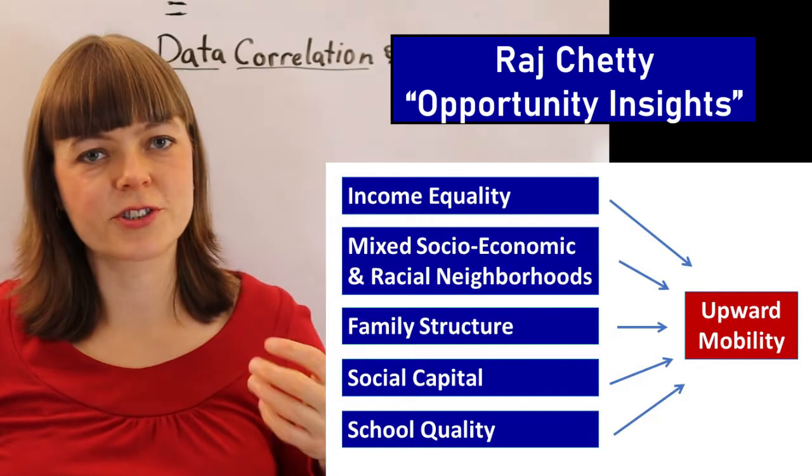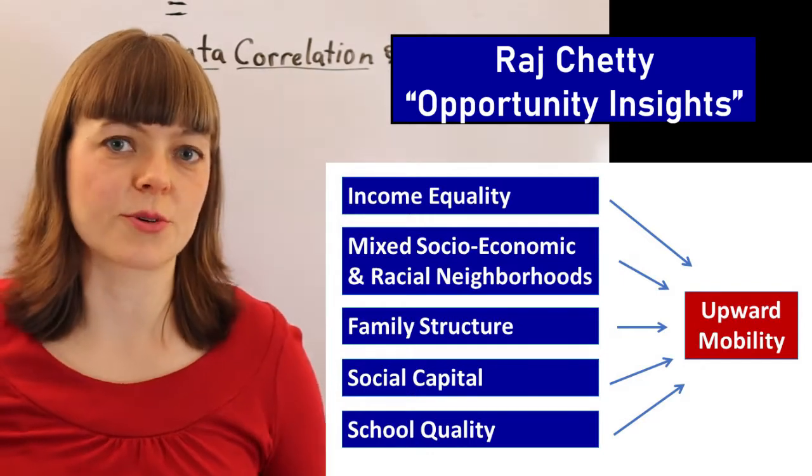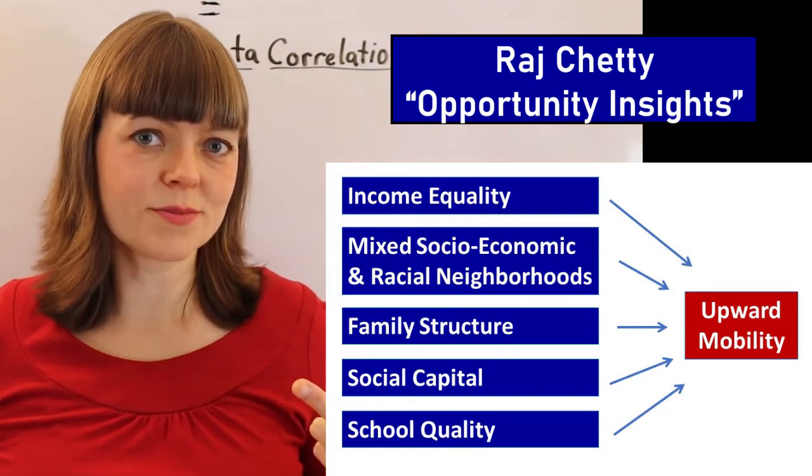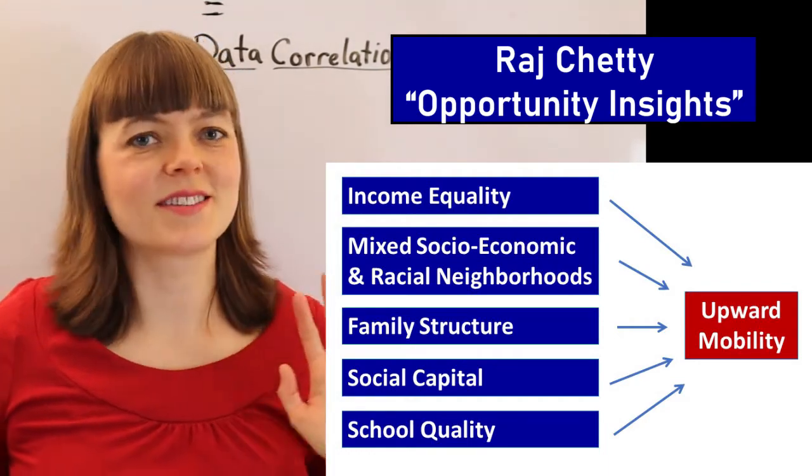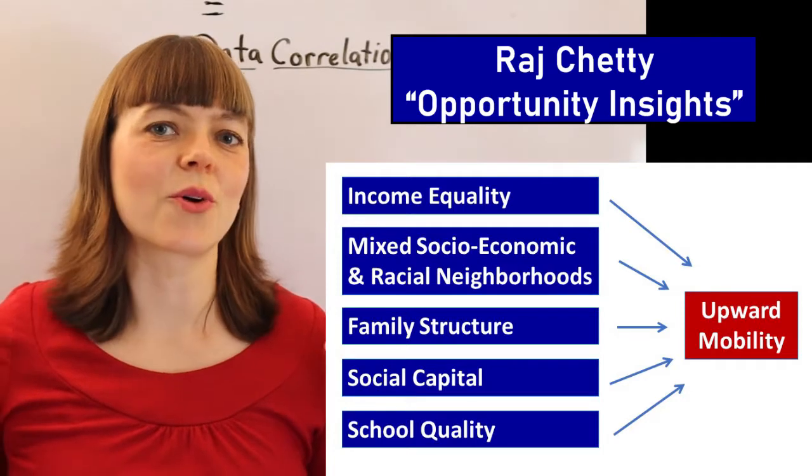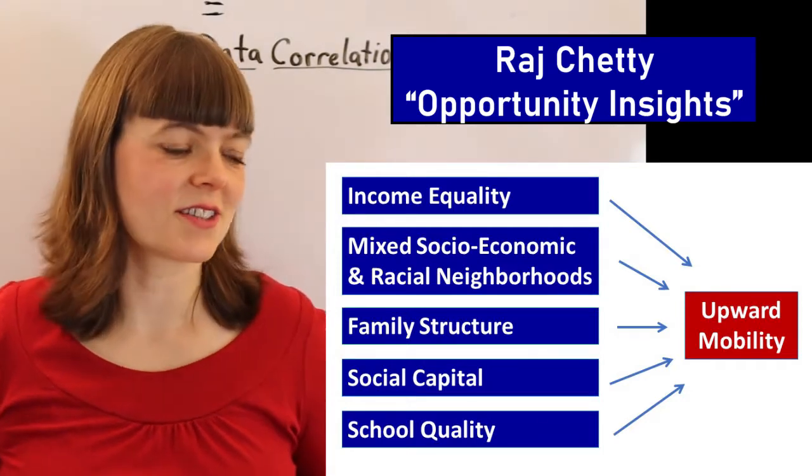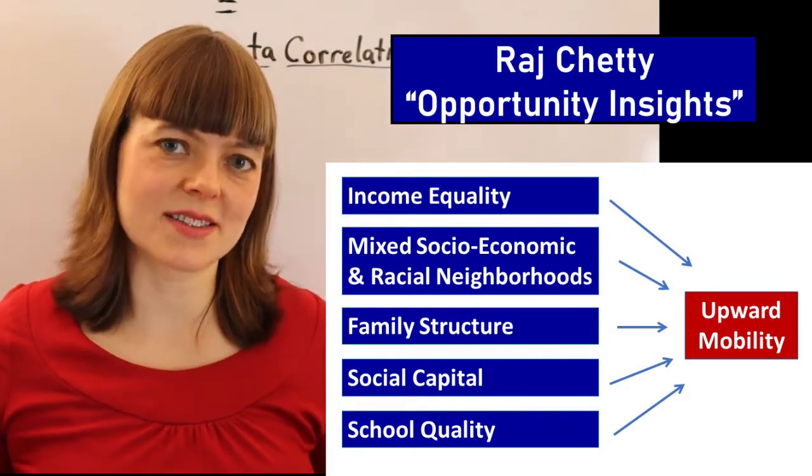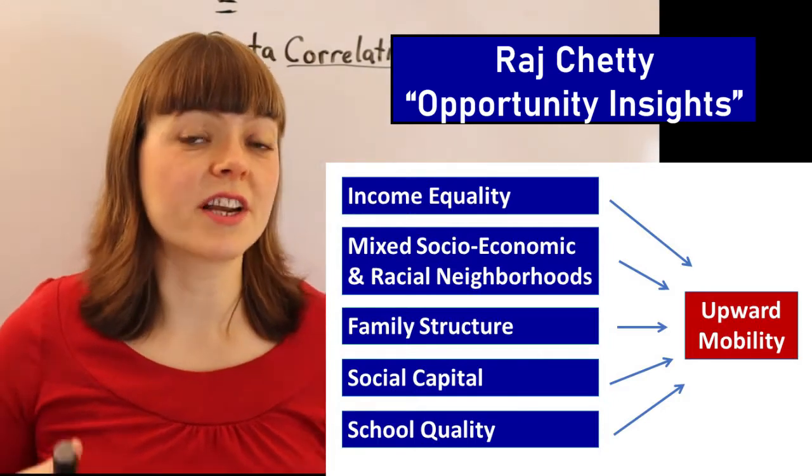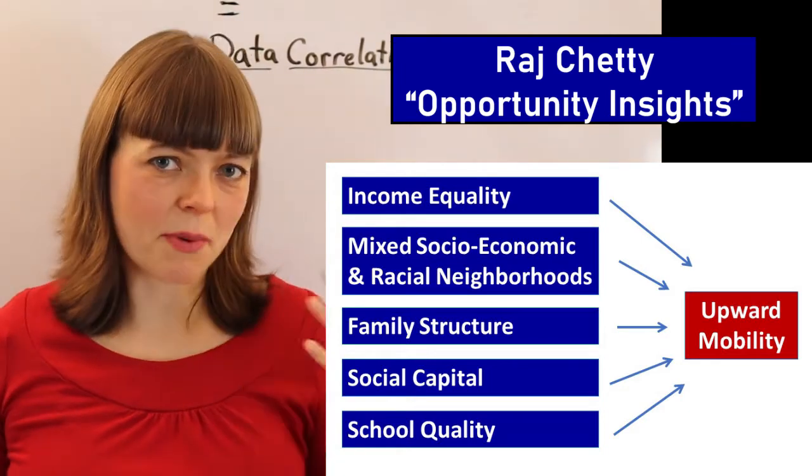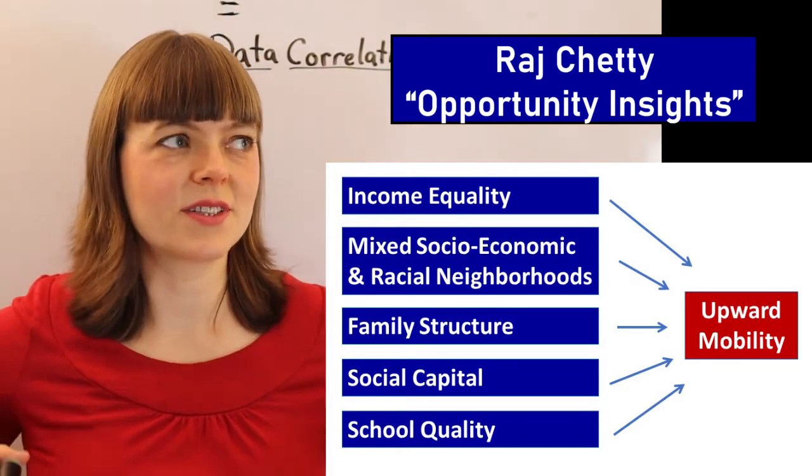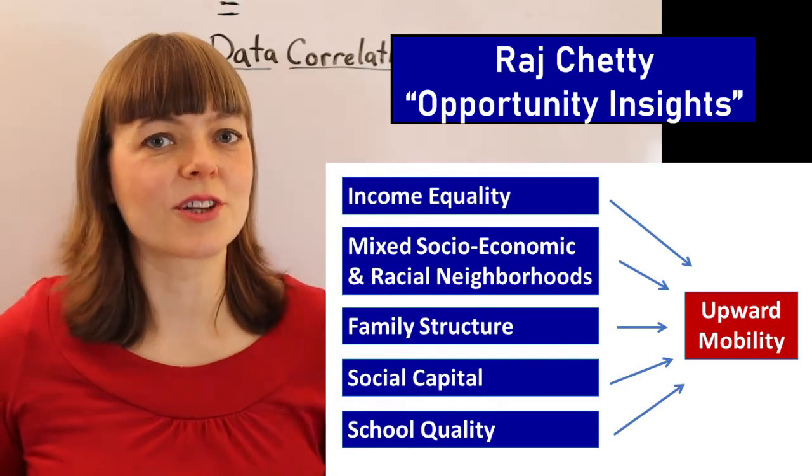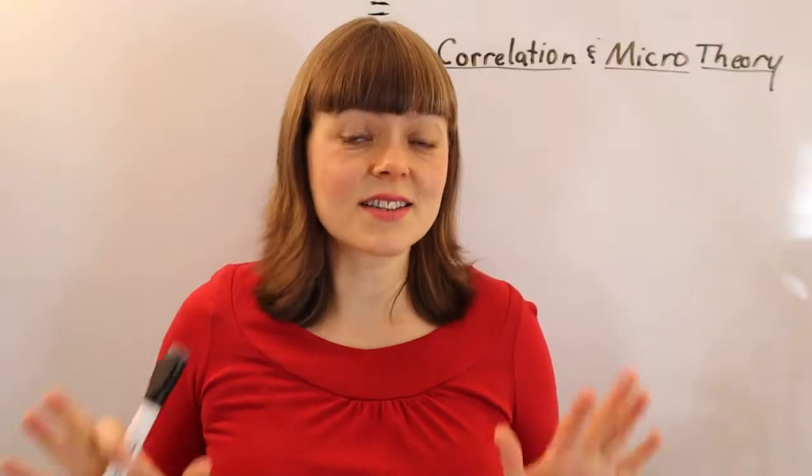Those five traits are family structure, which includes percentage of parents who are single parents. It includes income inequality, social capital, which can be measured in various ways such as number of bowling alleys or number of civic organizations or churches. It includes school quality, and it includes how mixed the neighborhoods are in terms of socioeconomic and racial mix of people. If there's positive things going on in each of these five realms, we see a correlation between that and upward mobility of children who grow up in those neighborhoods. That's the data.